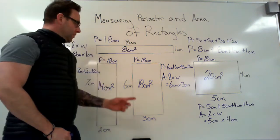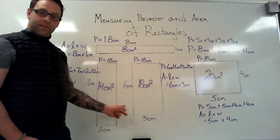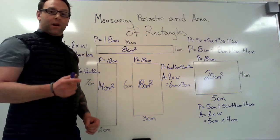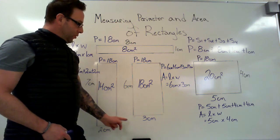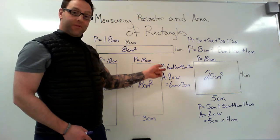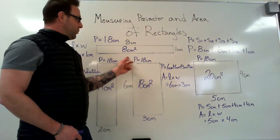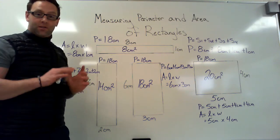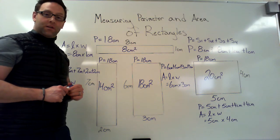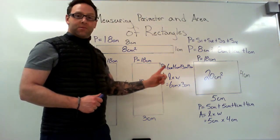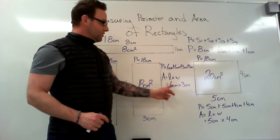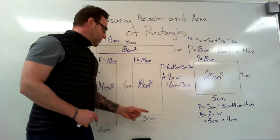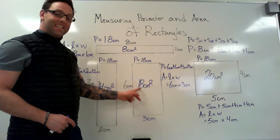Let's look at another example. This rectangle has a length of six centimeters and a width of three centimeters. Let's check the perimeter first — that's the distance around the outside. Six plus three is nine, plus six is 15, plus three is 18. So our perimeter is 18 as well. Now for the area: A equals l times w, which equals six times three. Six times three is 18, and since we're doing centimeters times centimeters, the area for this rectangle is 18 centimeters squared.